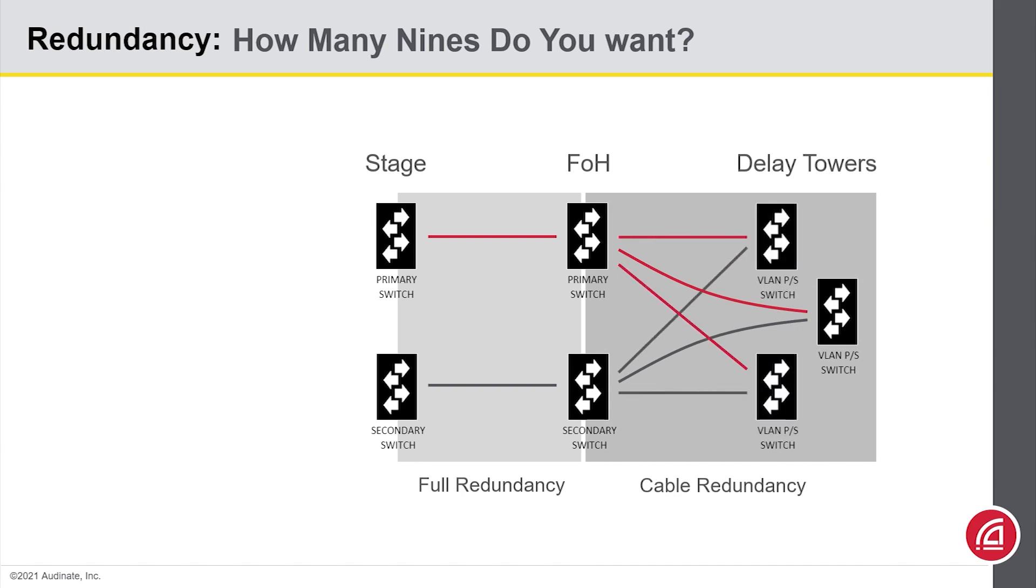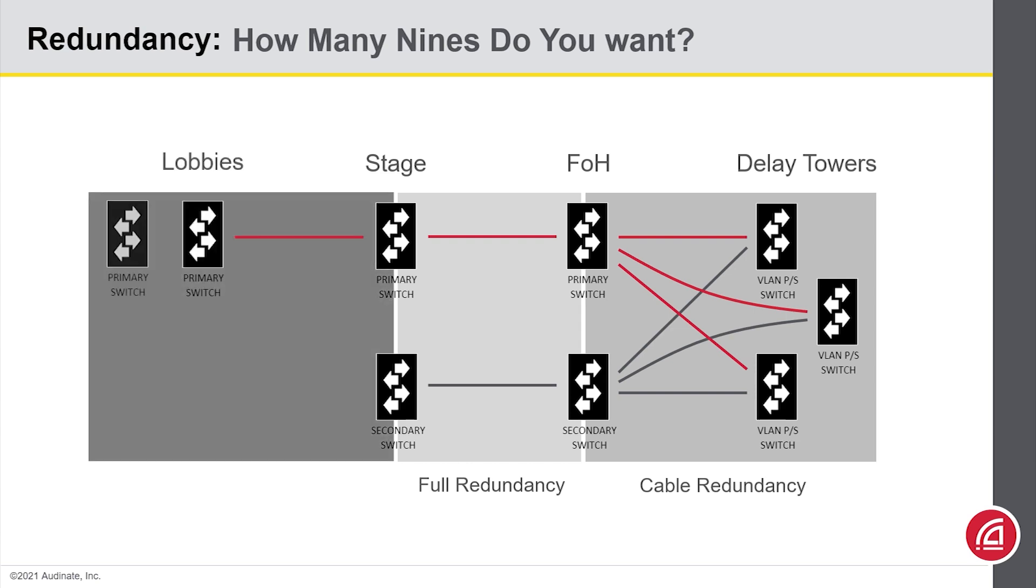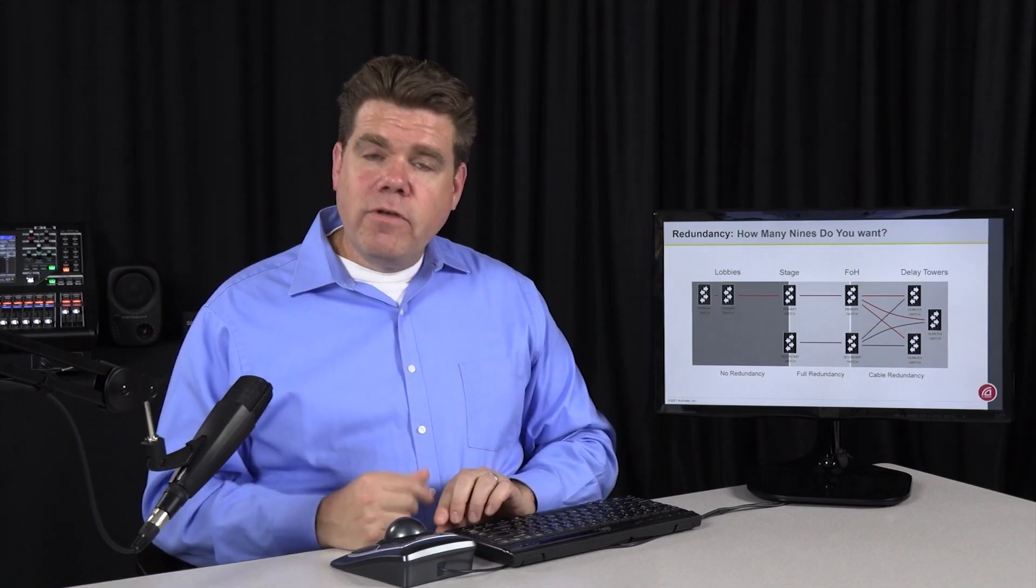Maybe something like a delay tower could be set on a single switch, putting the primary and secondary networks on separate VLANs. As you look at other parts of your system, maybe you decide that the lobbies and restrooms could go without redundancy.